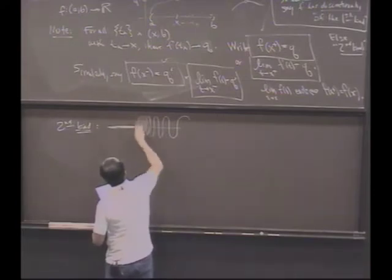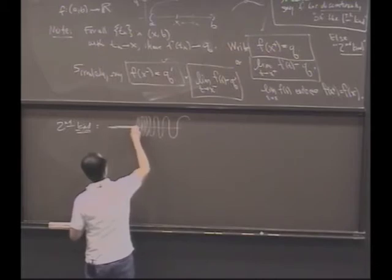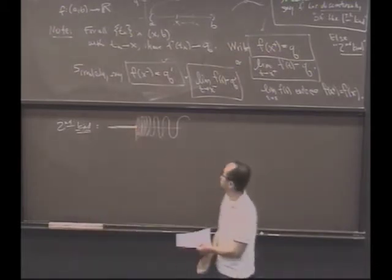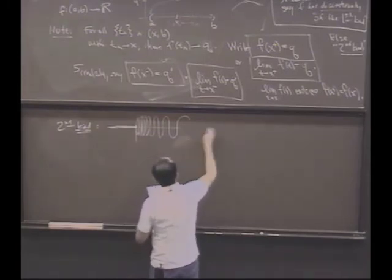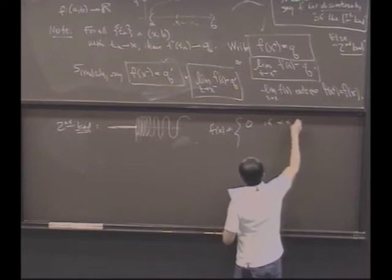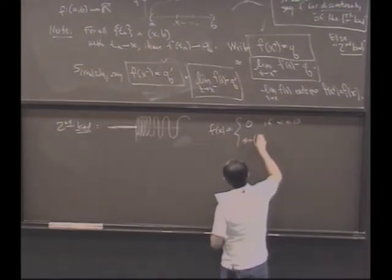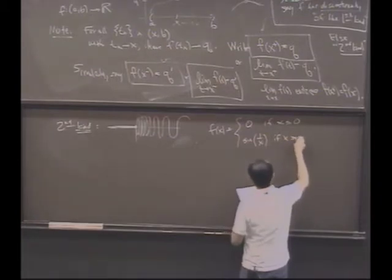Sine curve, like last time, and then at 0 we'll make it 0. And on the right-hand side, if you like, f(x) = 0 if x ≤ 0, and let's make it sin(1/x) if x > 0.